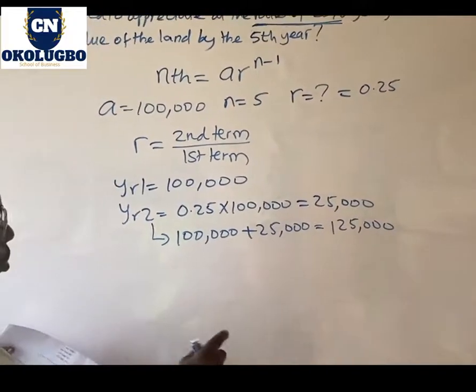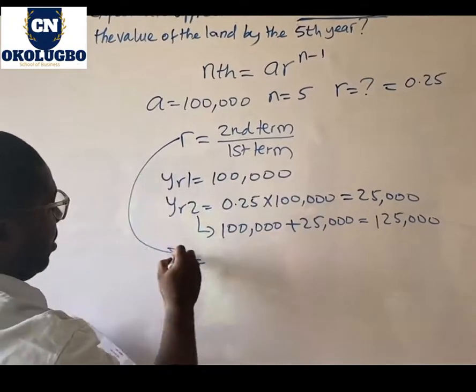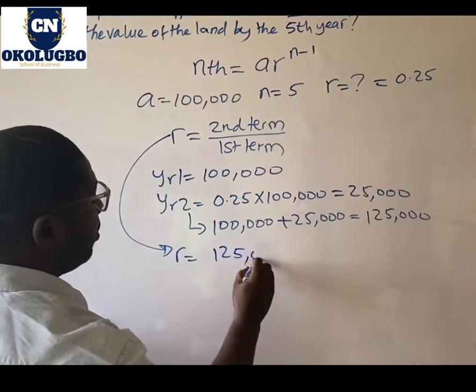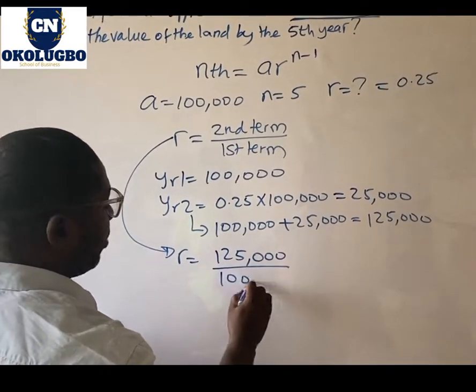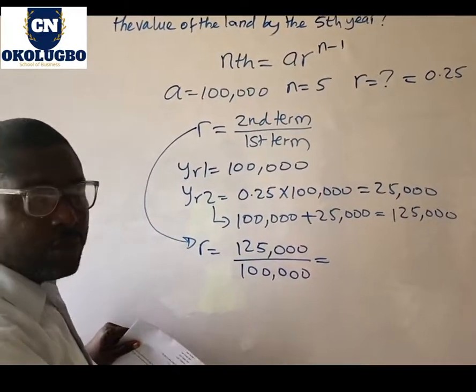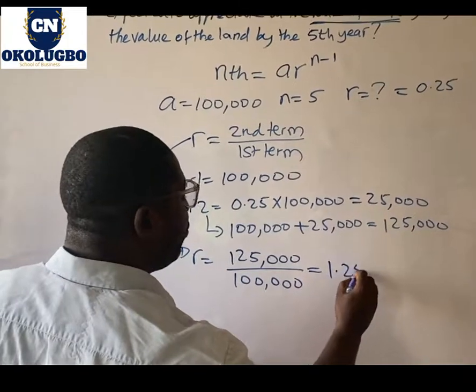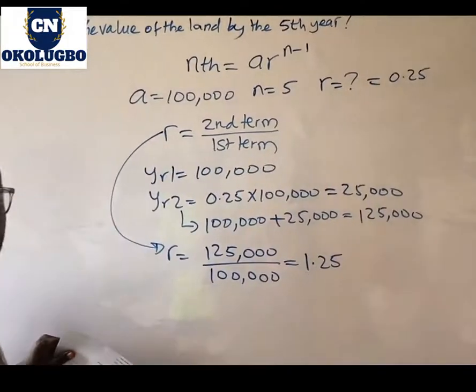Now what we do to get what R will be based on this: R will now be 125,000 divided by 100,000. Can you do this with me with your calculator? What you will have is 1.25, so R is 1.25.